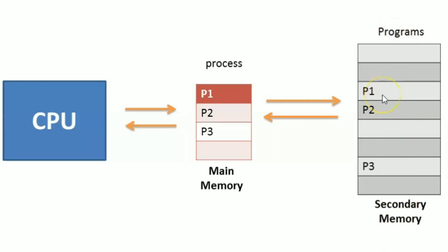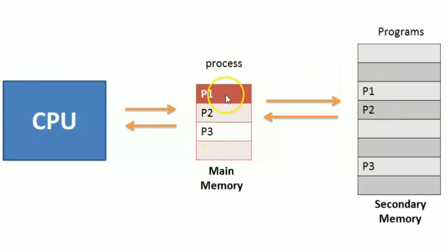Now we can execute our application. When we say CPU, it refers to the main memory. You can execute it from our secondary memory and process it.